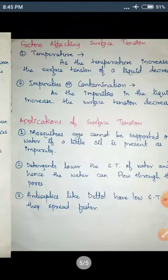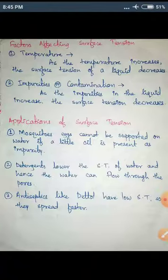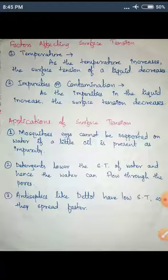Now, what are the factors affecting surface tension? First, temperature: as temperature increases, the surface tension of a liquid decreases. Second, impurities or contamination: as impurities in the liquid increase, surface tension decreases. For example, adding oil to water reduces its surface tension. Adding dust particles to water also reduces surface tension. Adding kerosene to oil decreases the surface tension of oil.